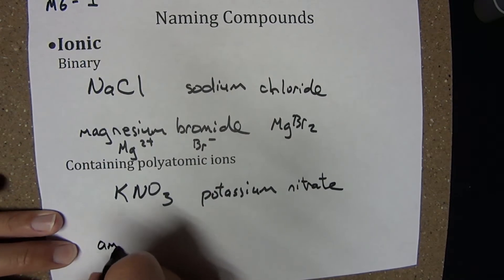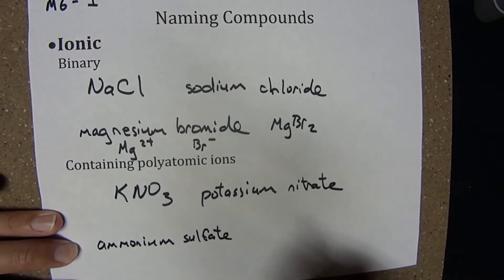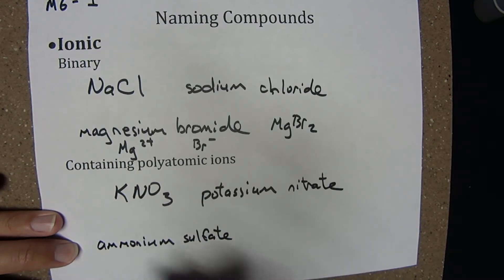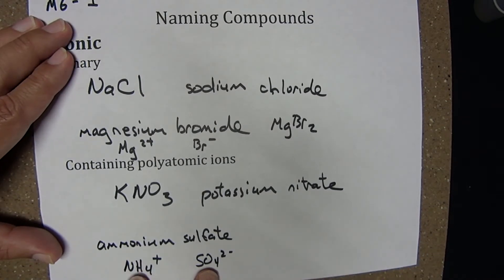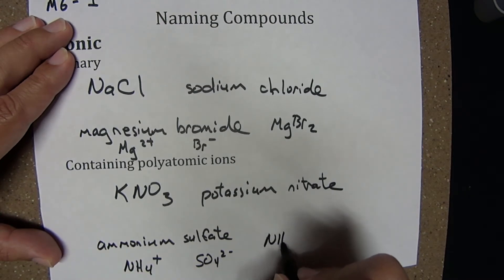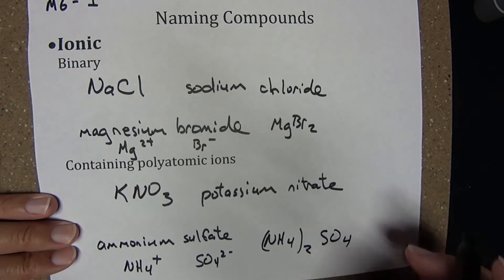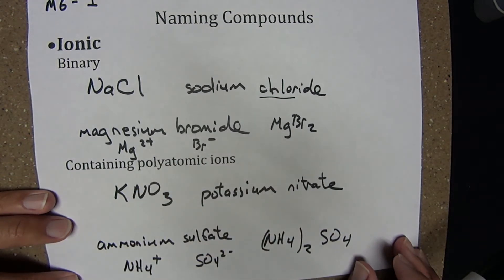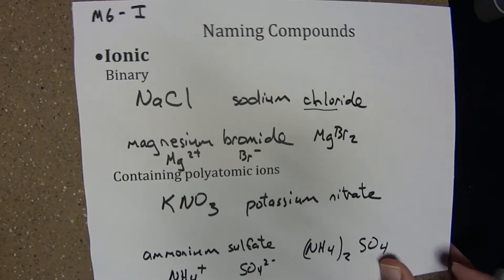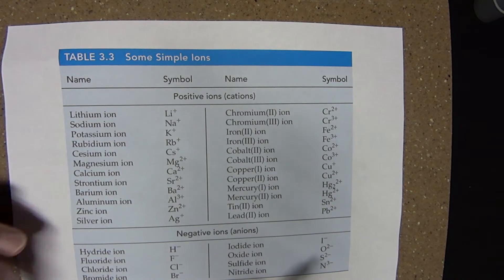Again, you should be able to go both ways. If we had a name like ammonium sulfate, we should be able to come up with the formula. Let's think about what these component ions are: ammonium NH₄⁺ and sulfate SO₄²⁻. To make a net neutral compound, I'll need twice as many ammonium as I have sulfate. Therefore, my chemical formula is (NH₄)₂SO₄. There are some things you have to commit to memory: common stems, names for common metals, and names for polyatomic ions. Tables will be provided as part of this module, and you should commit to memory the information in those tables.